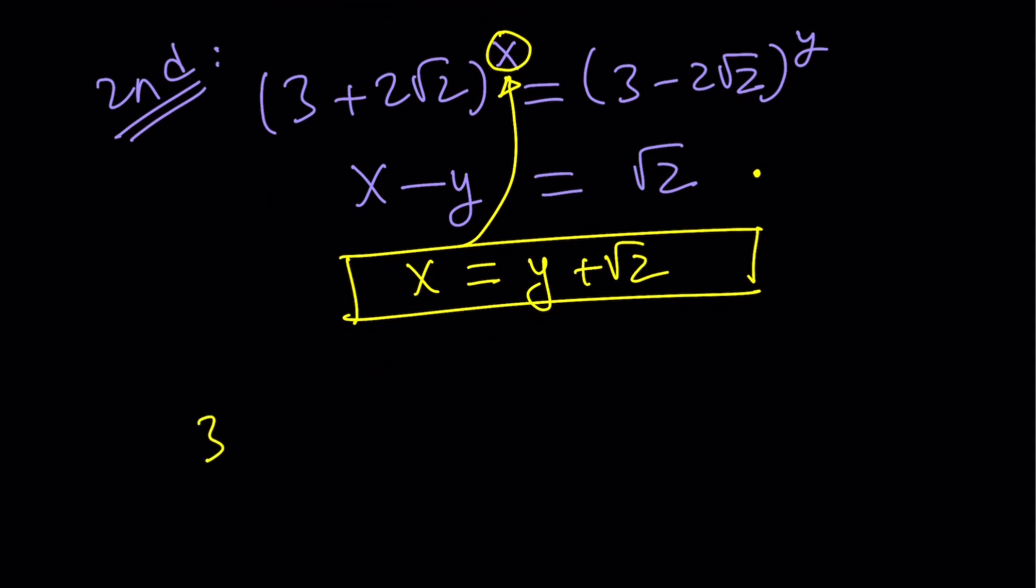So we're going to get (3+2√2)^(y+√2) = (3-2√2)^y. Awesome.